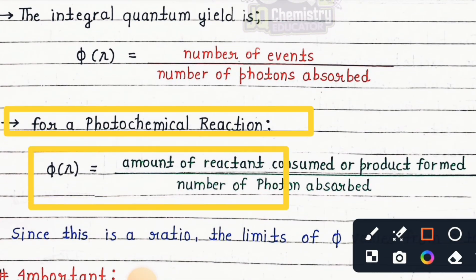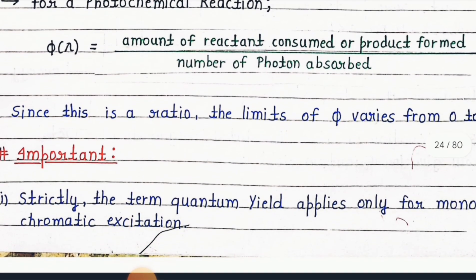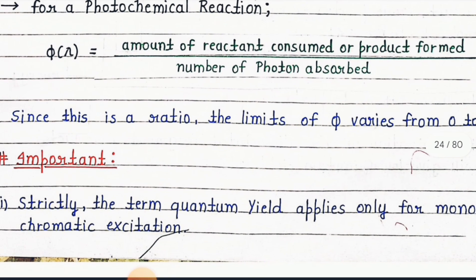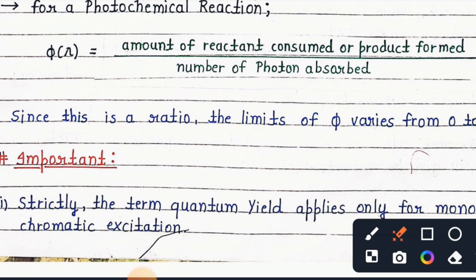φ(λ) equals amount of reactant consumed or product formed upon number of photons absorbed. Since this is a ratio, the limit of φ varies from 0 to 1. Importantly, strictly the term quantum yield